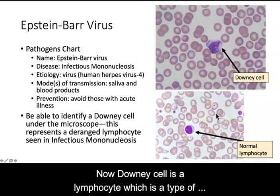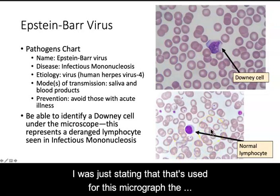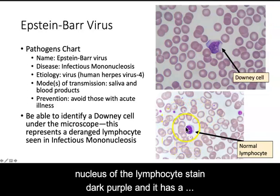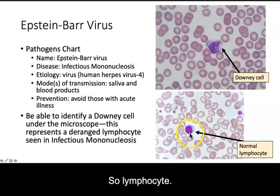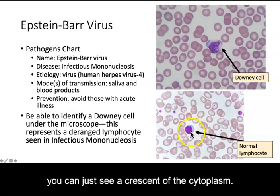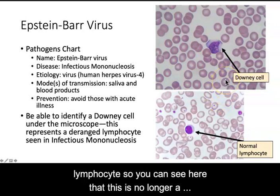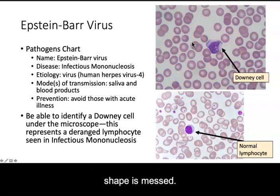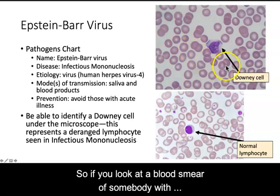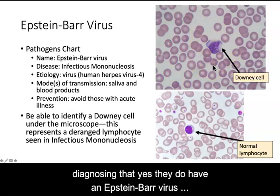A downy cell is a lymphocyte, which is a type of white blood cell. A normal lymphocyte looks like the one shown below — it's a round cell. With the staining used for this micrograph, the nucleus of the lymphocyte stains dark purple and it has a big nucleus, while the cytoplasm stains light purple, so a lymphocyte has a very large nucleus compared to its cytoplasm — you can just see a crescent of cytoplasm around the nucleus. A downy cell is a misshapen or deranged lymphocyte. You can see it's no longer circular; it looks like it's been smushed and the shape is messed up. So if you look at a blood smear of somebody with symptoms of mononucleosis and you see downy cells, that would be a way of diagnosing that they do have an Epstein-Barr virus infection.